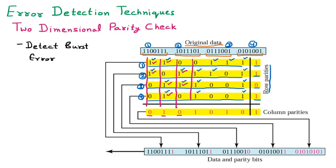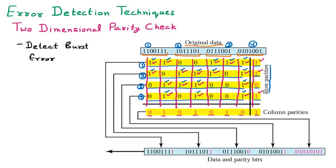In the next column we have one and two — two ones, already even, so zero is added. In the following column there is only one one — odd, so we add one more one. In the next column: one, two, three, four — even, so zero is added. Then a cross parity is calculated for the parity column itself: one, two, three — so one more is added. This is called the column parity.